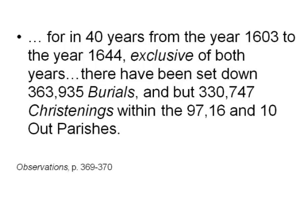I want to focus on the issues raised by the urban context in which Graunt largely sets his analysis and from which he derives his data. In chapter 7 of the Observations, on what he calls 'the differences between burials and christenings,' Graunt offers the observation on the London Bills that there were far more burials than christenings — for in 40 years, from the year 1603 to the year 1644 exclusive of both years, there have been set down 363,935 burials and but 330,747 christenings within the various parishes that constituted his analytical setting in London.